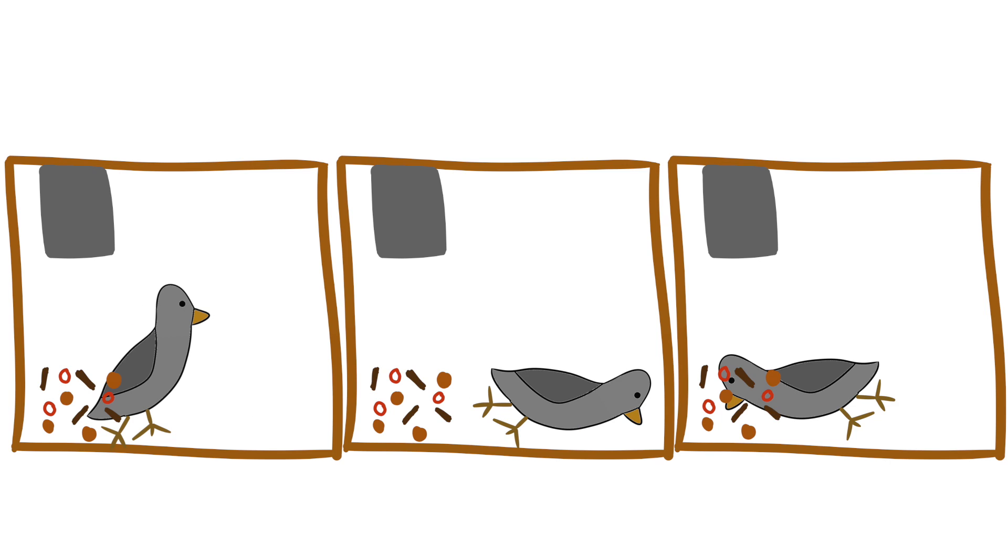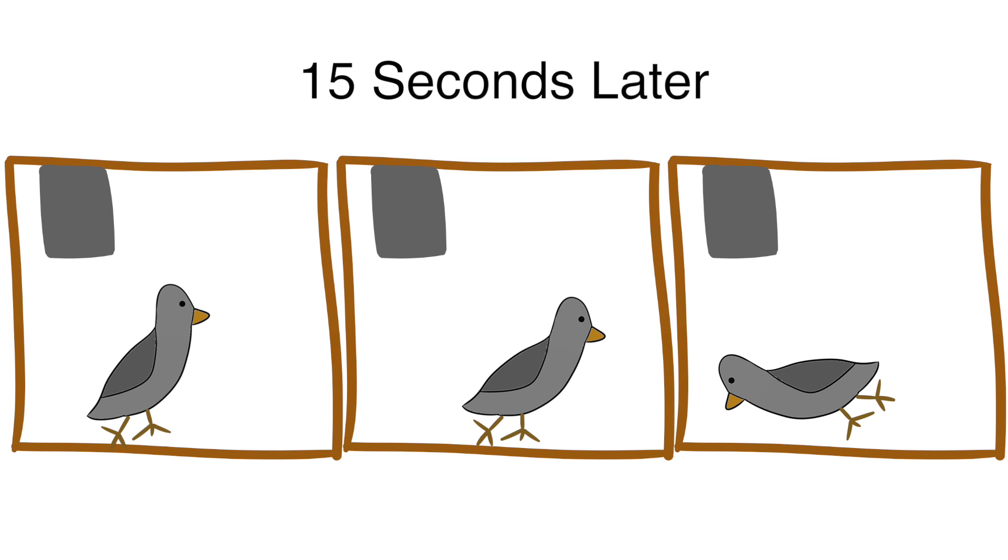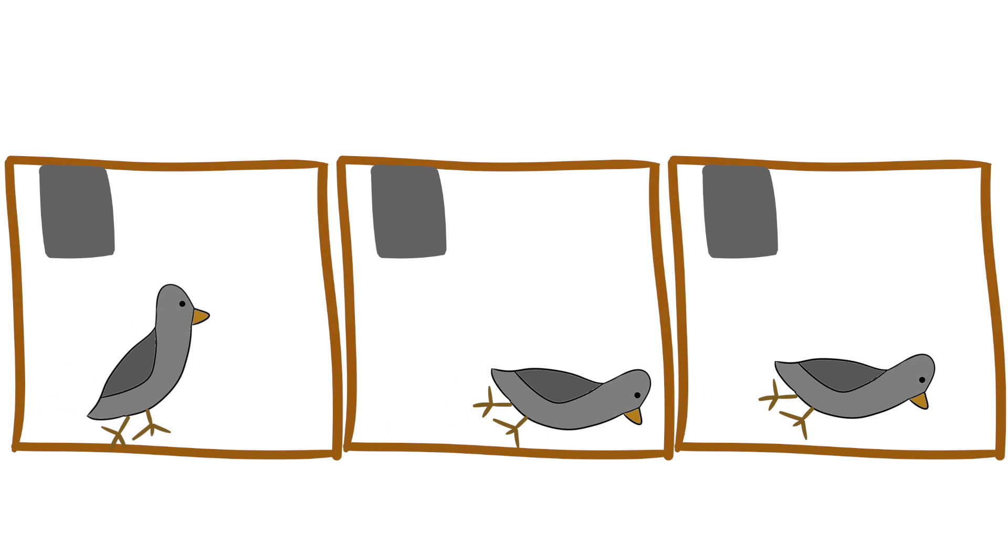The birds essentially attributed whatever they were doing at the time the food was delivered as the reason the food was delivered. Obviously, this notion is false since the food was going to come no matter what, but the pigeons believed that it was something they did that caused it. The pigeons developed a superstition.